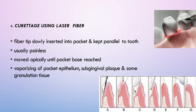Curettage using laser fiber involves inserting the laser fiber tip into the pocket, parallel to the tooth. It is usually a painless procedure. The fiber is moved apically until the pocket base is reached. After scaling and root planing, the laser fiber is inserted into the pocket, vaporizing the pocket epithelium, subgingival plaque, and some granulation tissue, ultimately leading to healing with a long junctional epithelium.